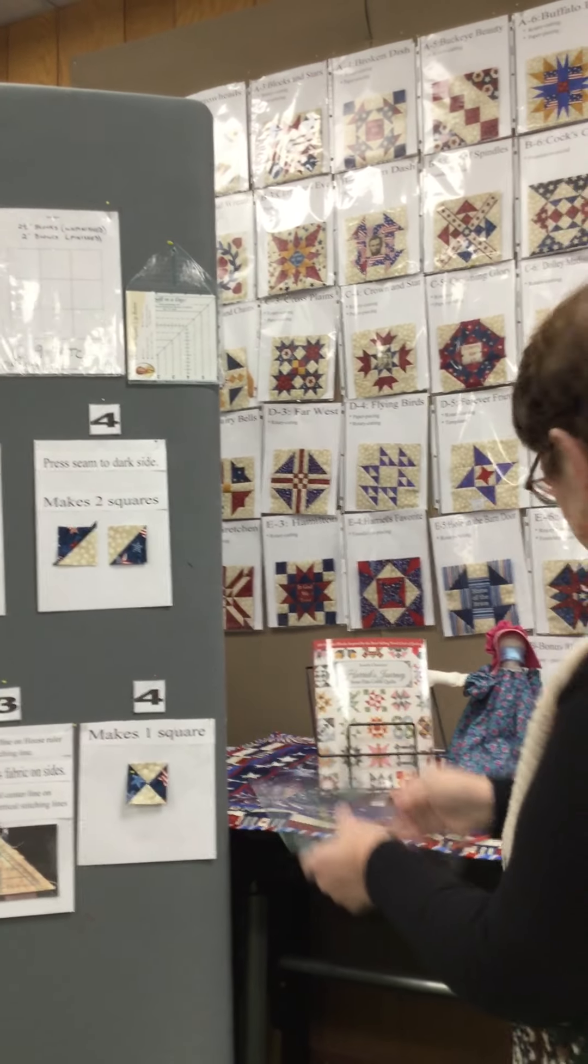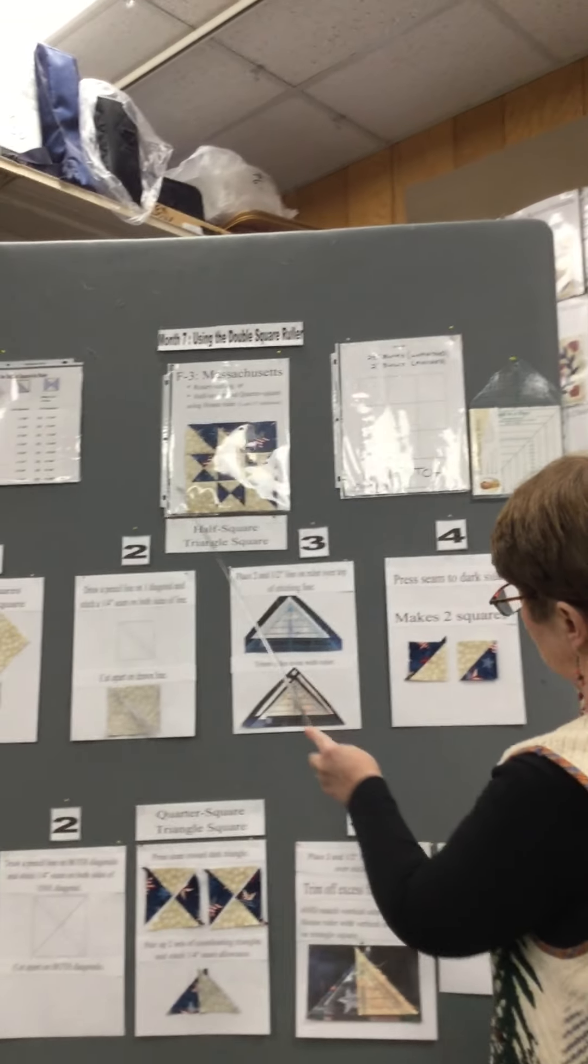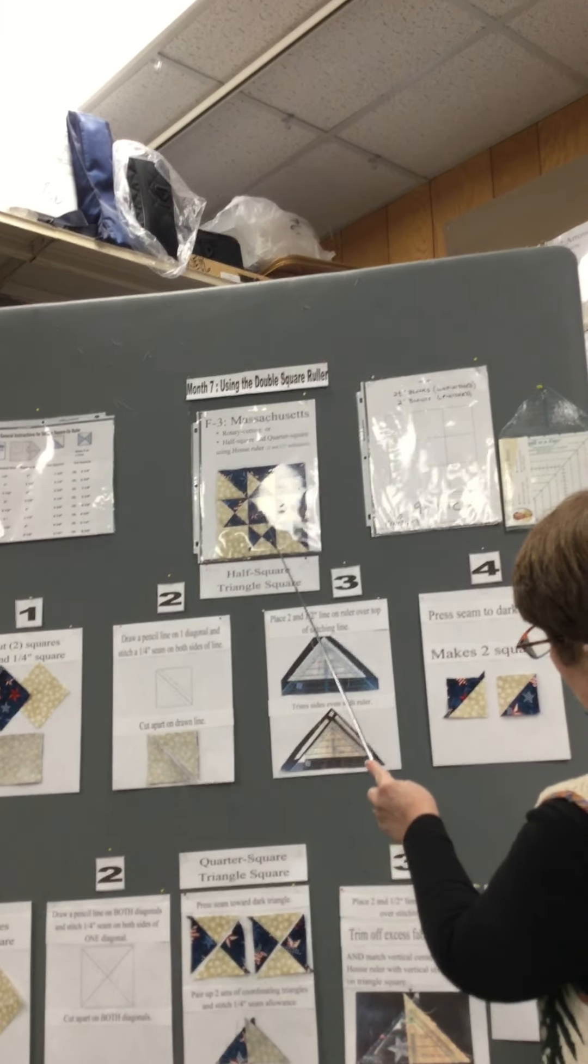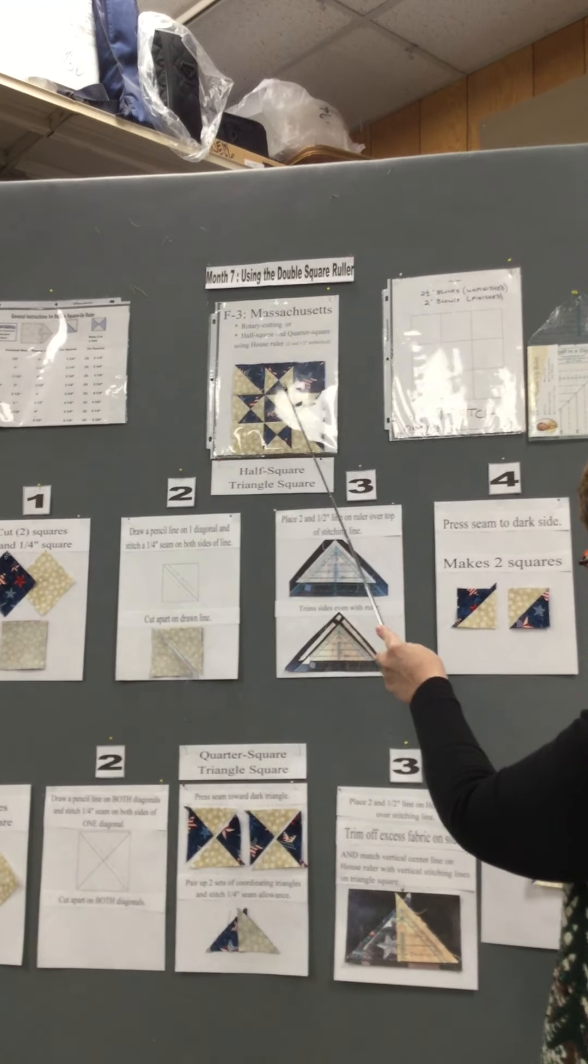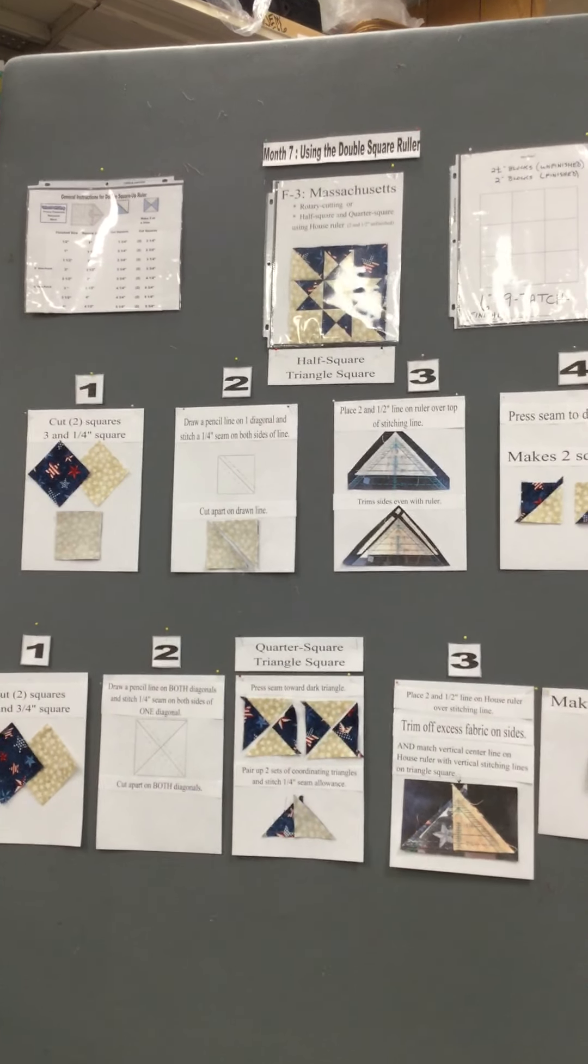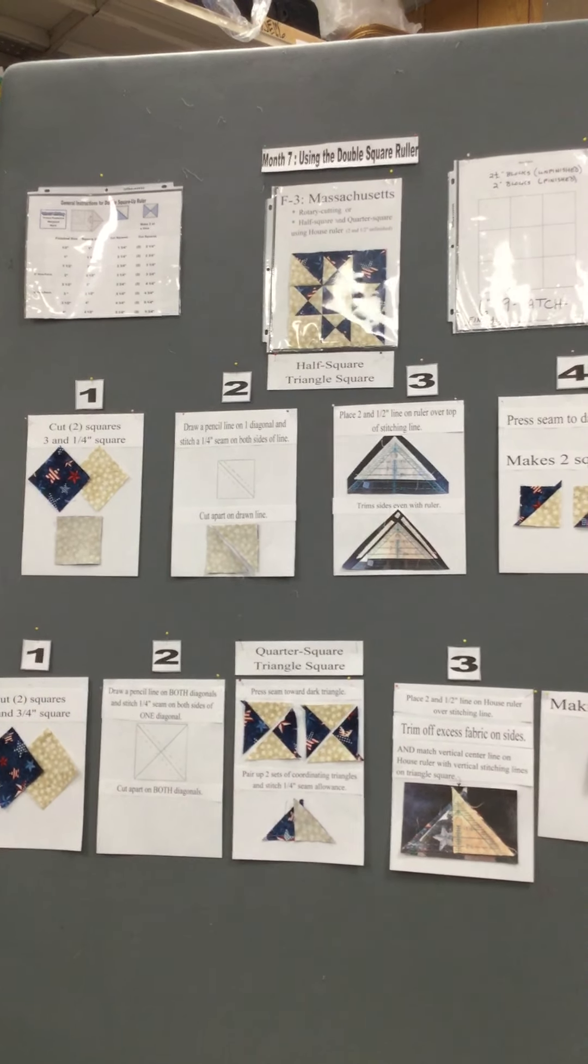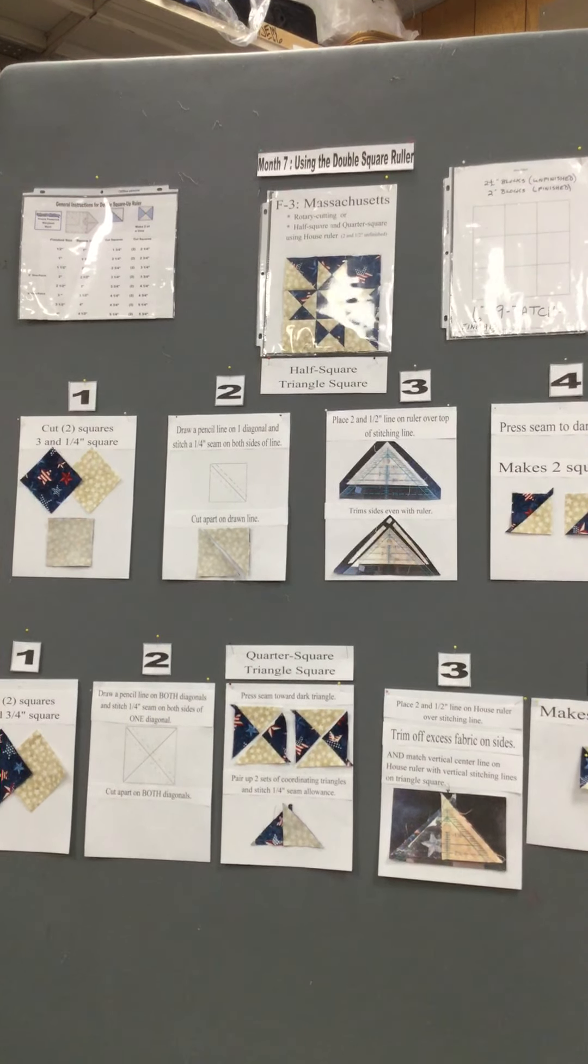If you look at Massachusetts, you have a half square triangle in these three areas and you have a quarter square triangle in these four areas. This month there's a lot of those in our block, so I decided it would be a great idea to just review again how to make them with what we call the house ruler.